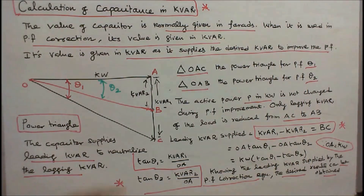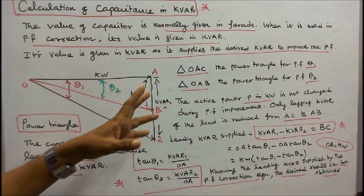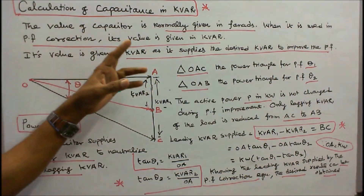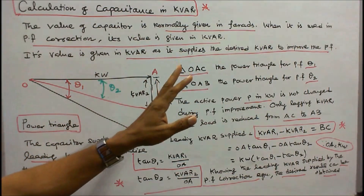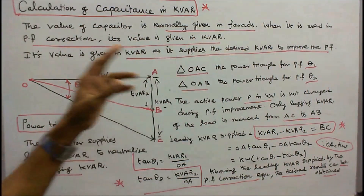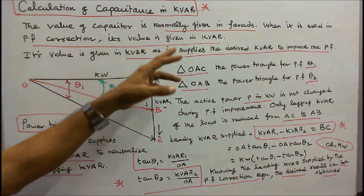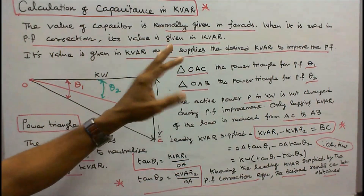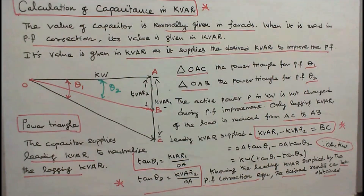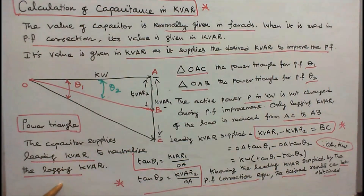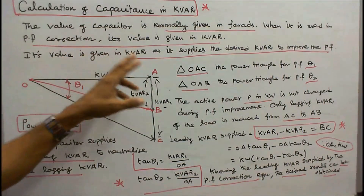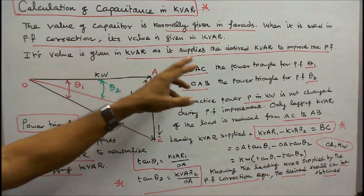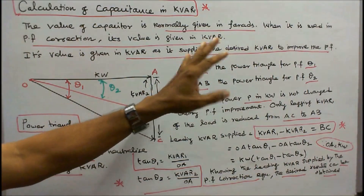The calculation of capacitance in KVAR: the value of a capacitor is normally given in Farads, but when it is used in power factor correction, its value is given in KVAR. The capacitor supplies leading KVAR to neutralize the lagging KVAR, and its value is expressed in KVAR as it supplies the desired KVAR to improve the power factor.